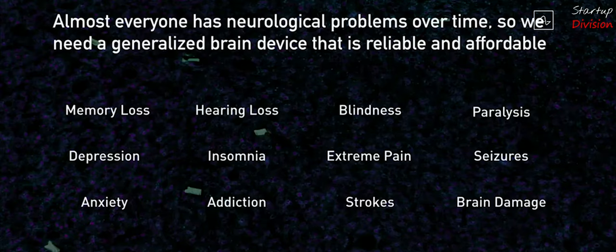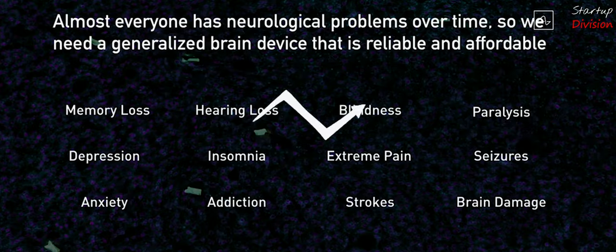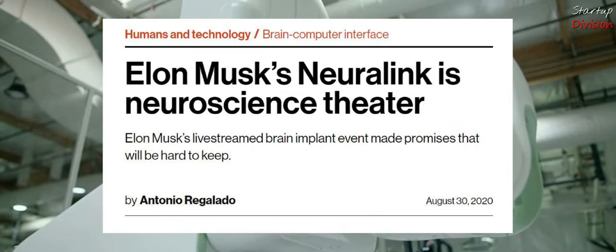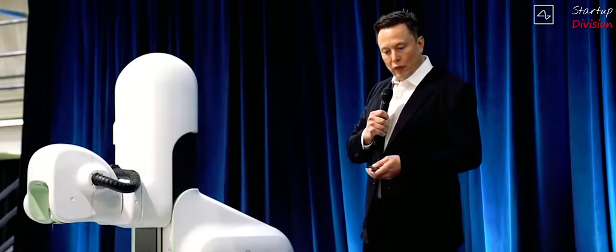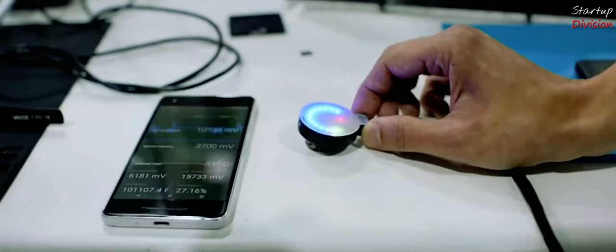Musk in the recent Neuralink event claimed that the Neuralink would be akin to a Fitbit in your skull, which would cure paralysis, deafness, and a whole range of neurological diseases. MIT Technology Review, however, refuted these claims by Musk as highly speculative. Musk claims that the device has already been tested on a monkey and is very hopeful to get the go-ahead by the US regulators to start trials on humans.